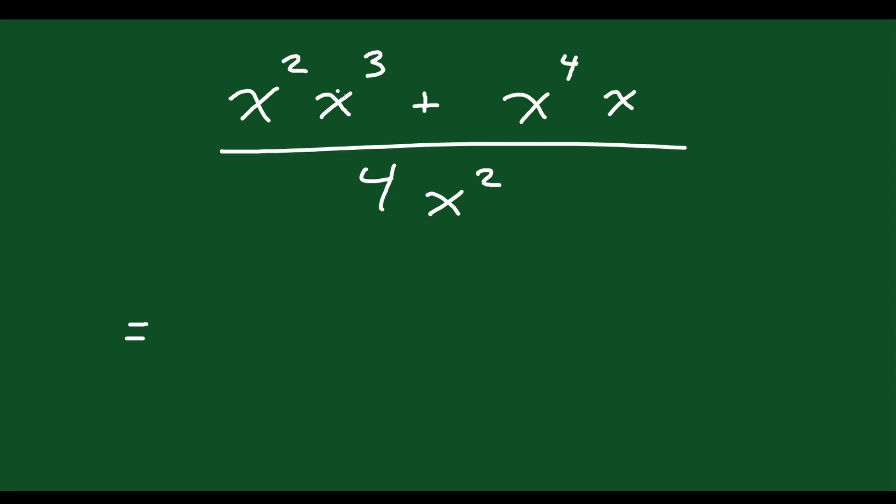Okay, so what's x squared times x cubed? Well, remember, when you're multiplying things with the same base, you can add the exponents. So that's going to become x to the 5.